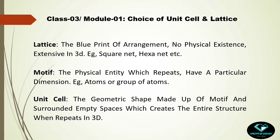The unit cell is the geometric shape made up of the motif and the surrounding empty spaces, which creates the entire structure when repeating in three dimensions. So not only the motif is repeating — the surrounding space is also repeating. This entire concept — motif plus the empty space surrounding it — is the unit cell.